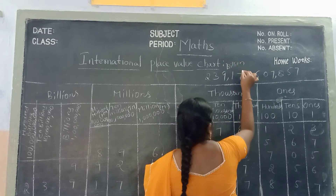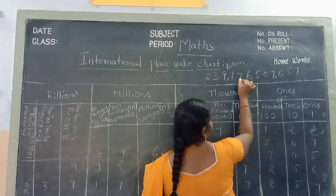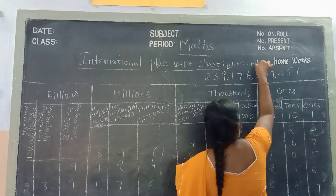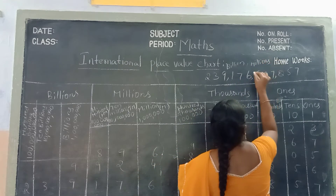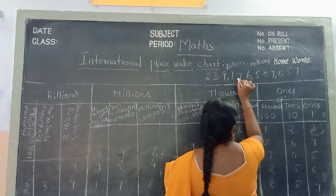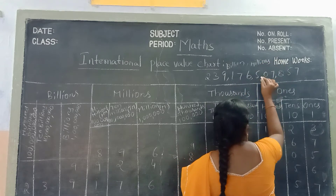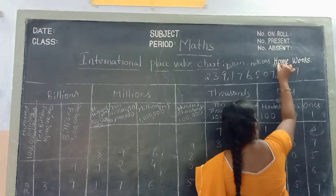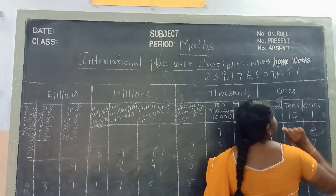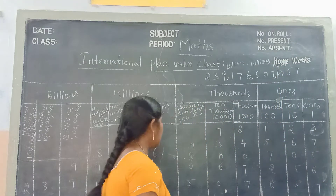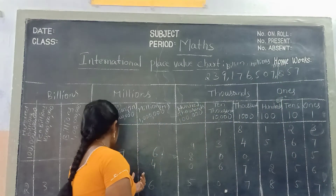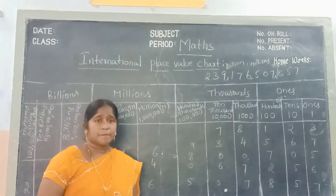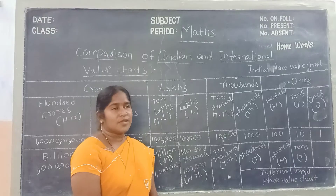Okay, 239 billions. And next one is 176 million, 407,000, 857. Okay children, this is the international place value chart, children.